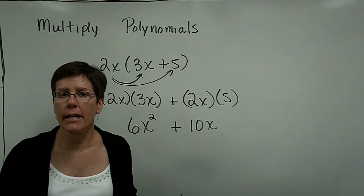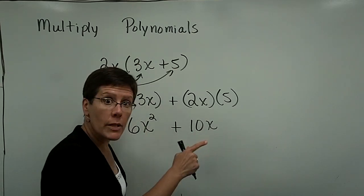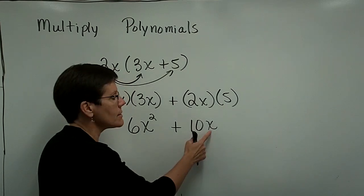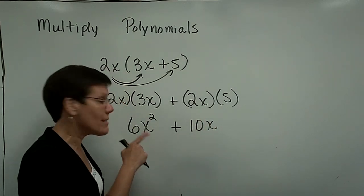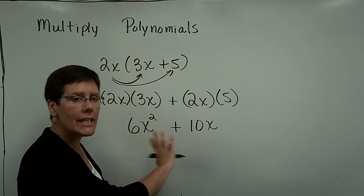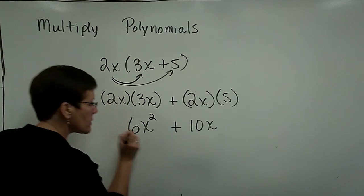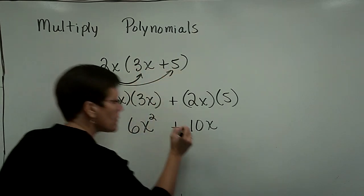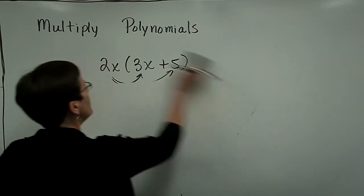Don't try to collect these. They're not like terms. This has a degree of 2. This one has a degree of 1. The only way you could collect this is if this might have been an x squared term or if this might have been just 6x, not a 6x squared. Leave that alone. I'm all done. From now on, 2x times 3x is 6x squared. 2x times 5 is 10x. Don't write down any other steps.